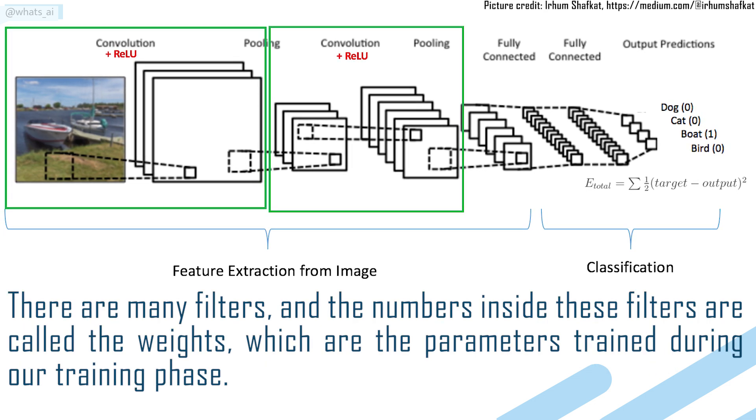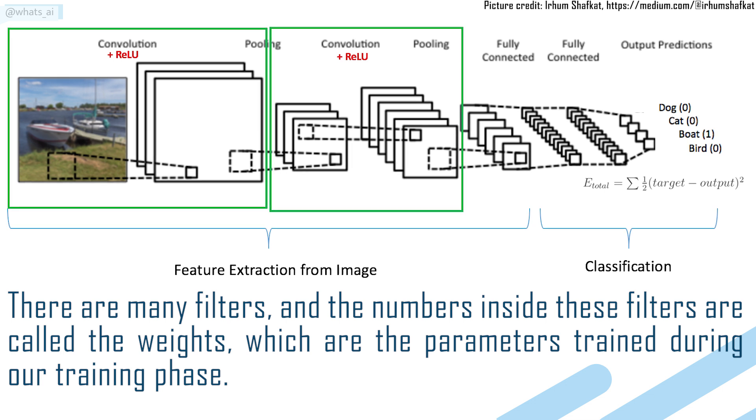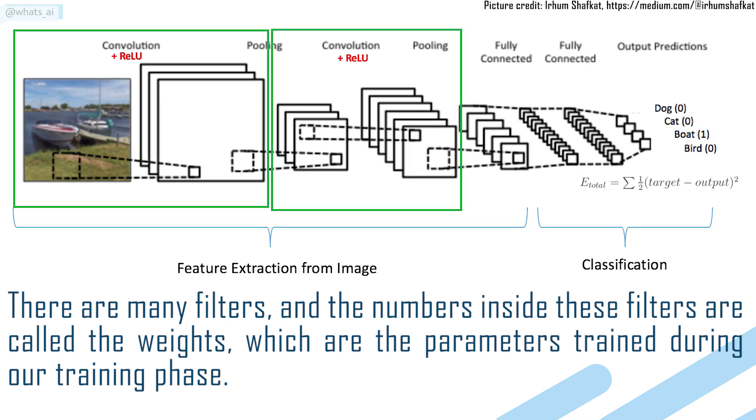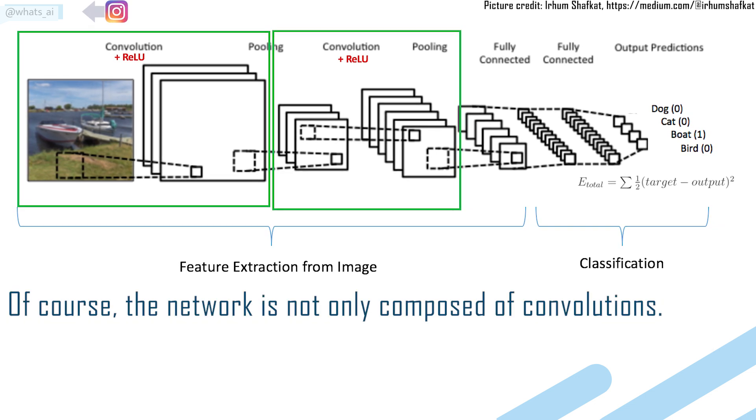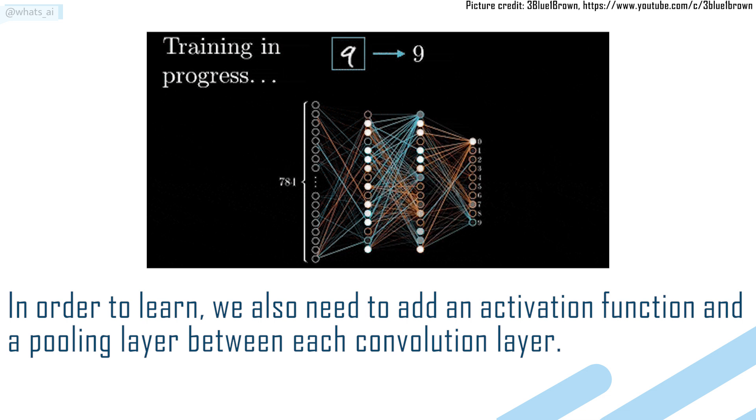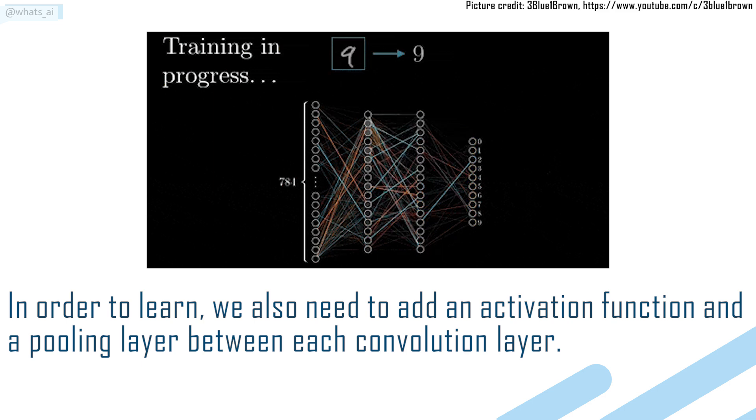There are many filters and the numbers inside these filters are called the weights, which are the parameters trained during our training phase. Of course, the network is not only composed of convolutions. In order to learn, we also need to add an activation function and a pooling layer between each convolution layer.